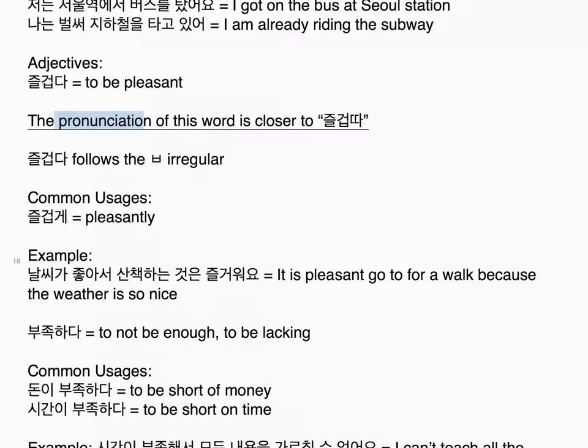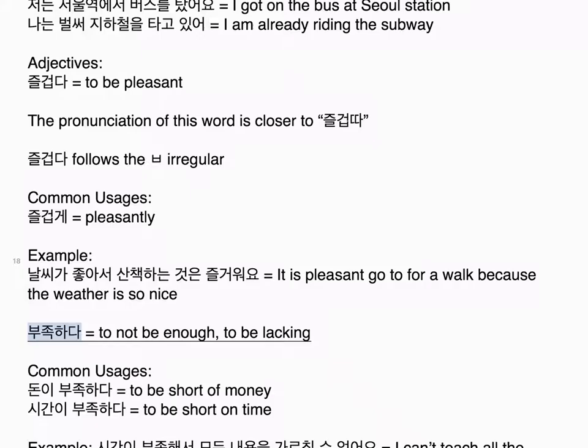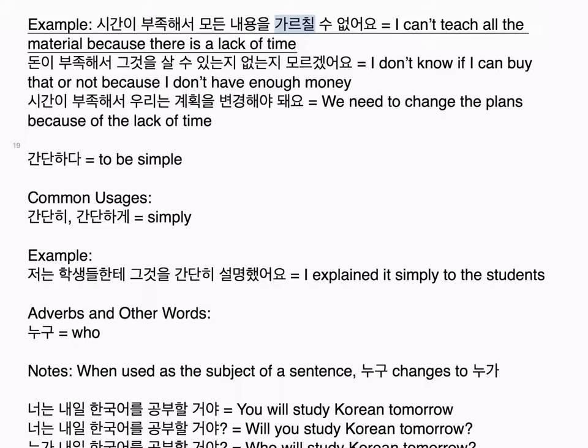타다 equals to ride. Common usages: 버스를 타다 — to get on/ride a bus; 전철을 타다 — to get on/ride a subway train; 엘리베이터를 타다 — to get on/ride an elevator. Notes: 타다 is a verb with many meanings depending on the situation; one of the most common is to ride, used when you are on something that is moving — boat, horse, taxi, subway, elevator, bus. Examples: 저는 서울역에서 버스를 탔어요 — I got on the bus at Seoul Station. 나는 벌써 지하철을 타고 있어 — I am already riding the subway.